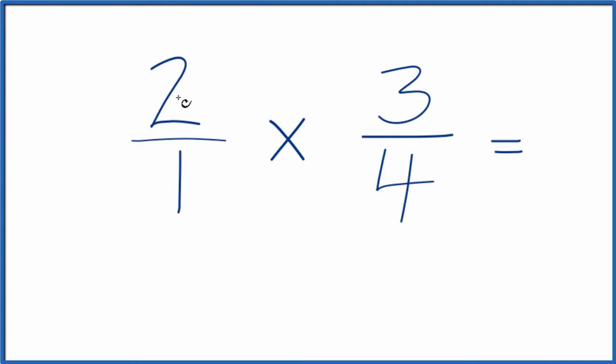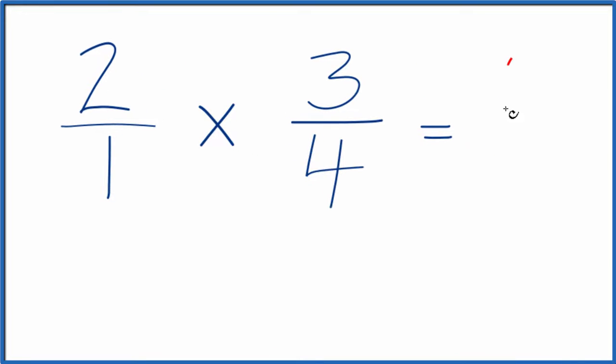Once we have this, we're just going to multiply the numerator and then the denominators. 2 times 3 is 6, and 1 times 4 is 4. So 2 times 3 fourths, we get 6 fourths.